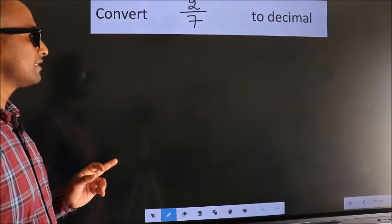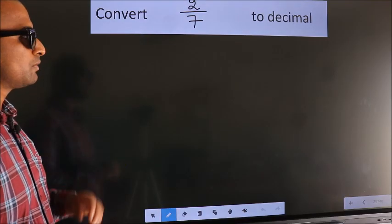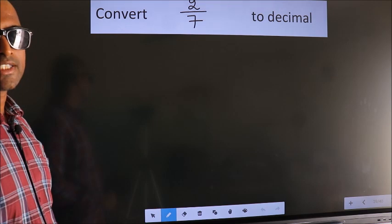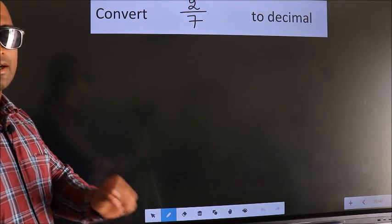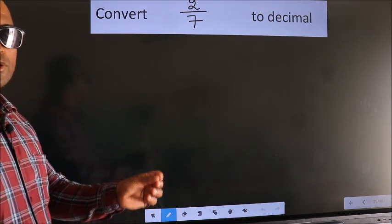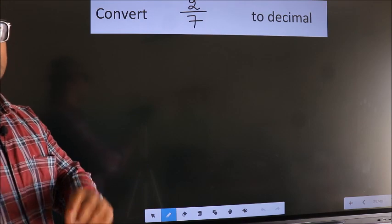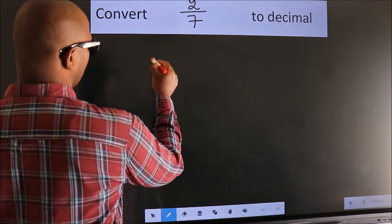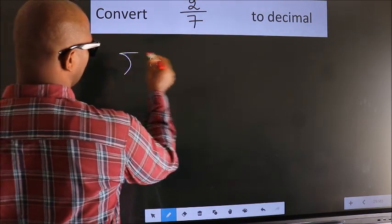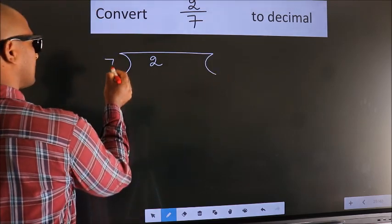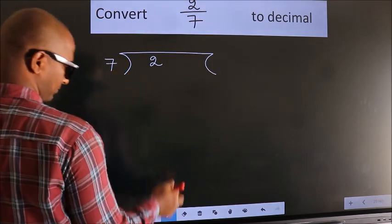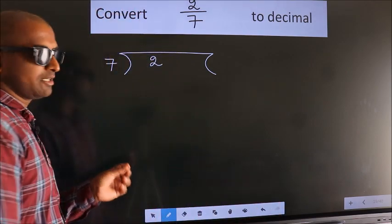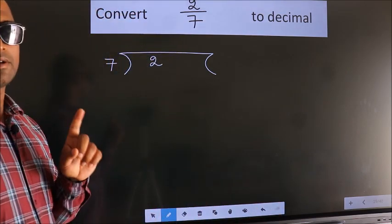Convert 2 by 7 to decimal. To convert this to decimal, we have to divide. And to divide, we should frame it in this way — 2 here, 7 here. This is your step 1.